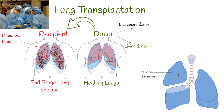A lobe is a portion of the lung. The right lung consists of three lobes: upper, middle, and lower. The left lung has only two lobes: upper and lower.